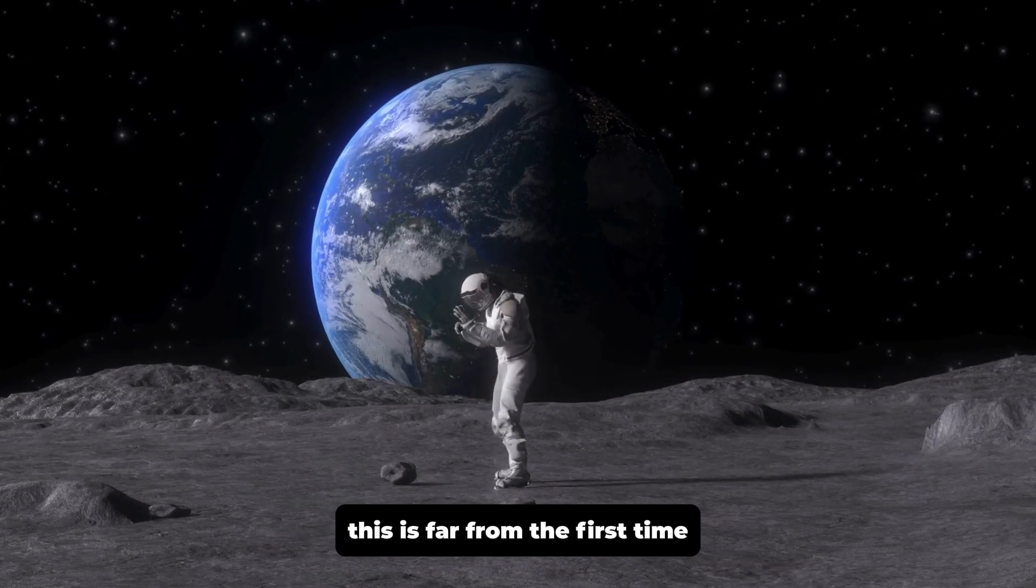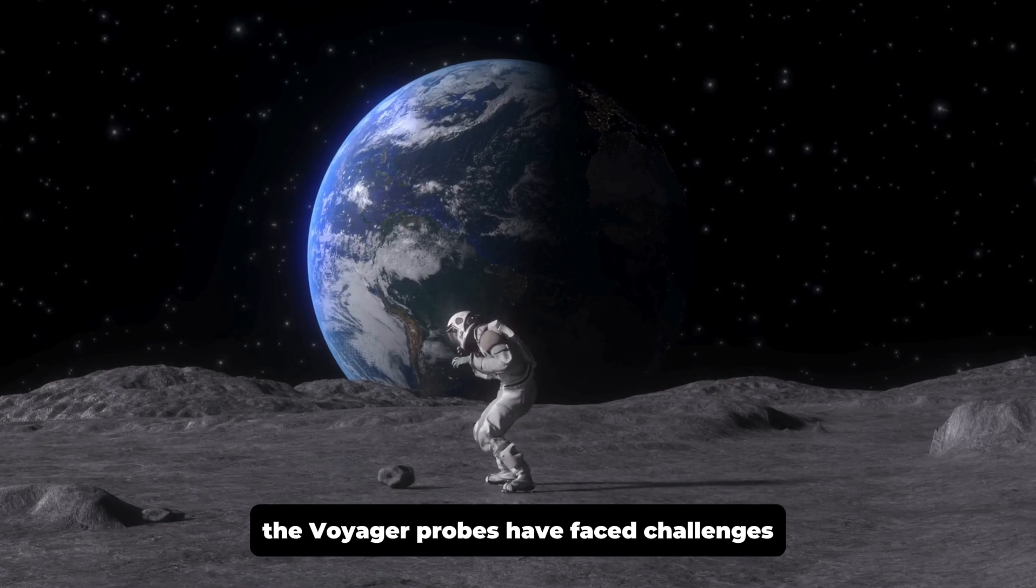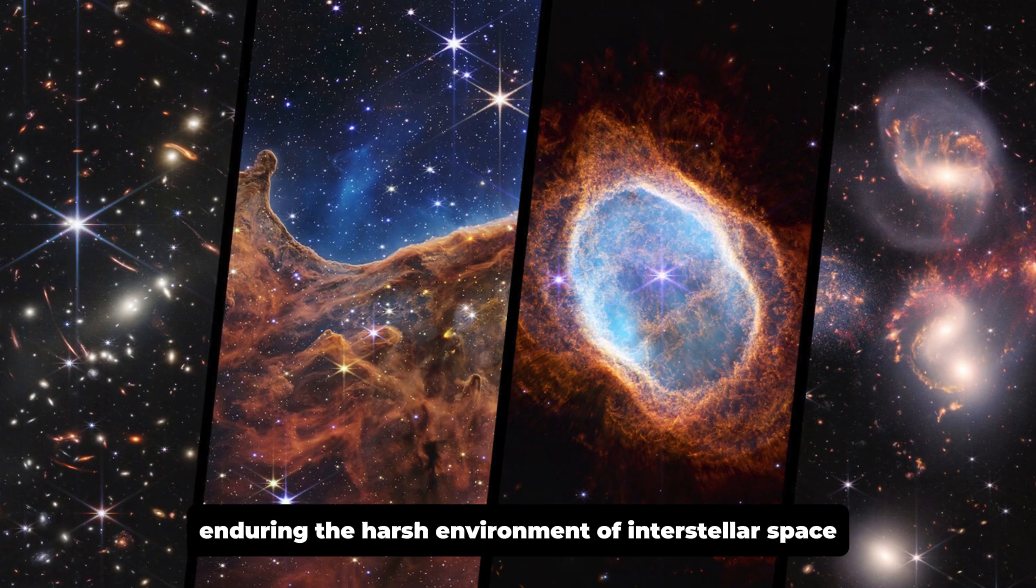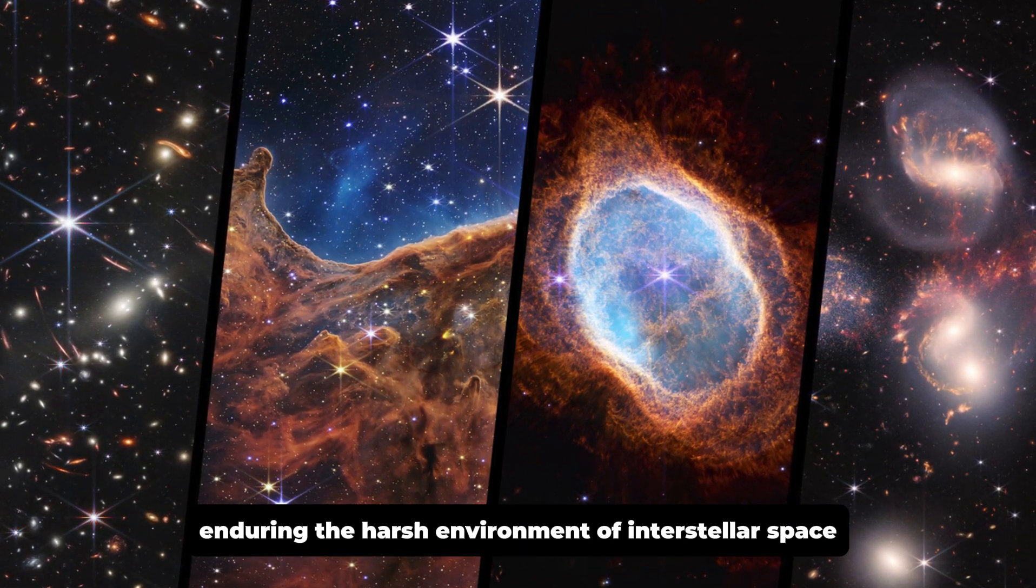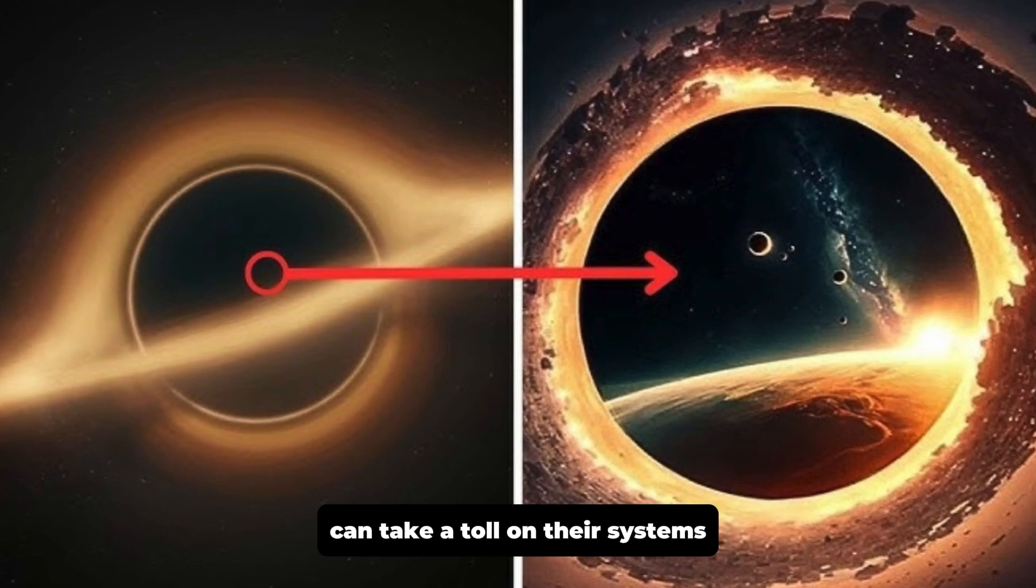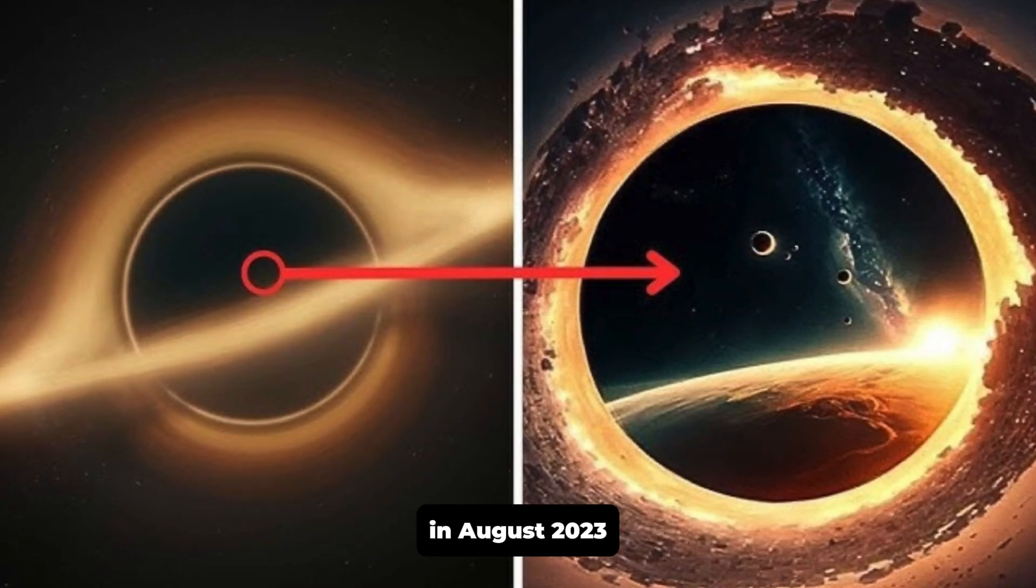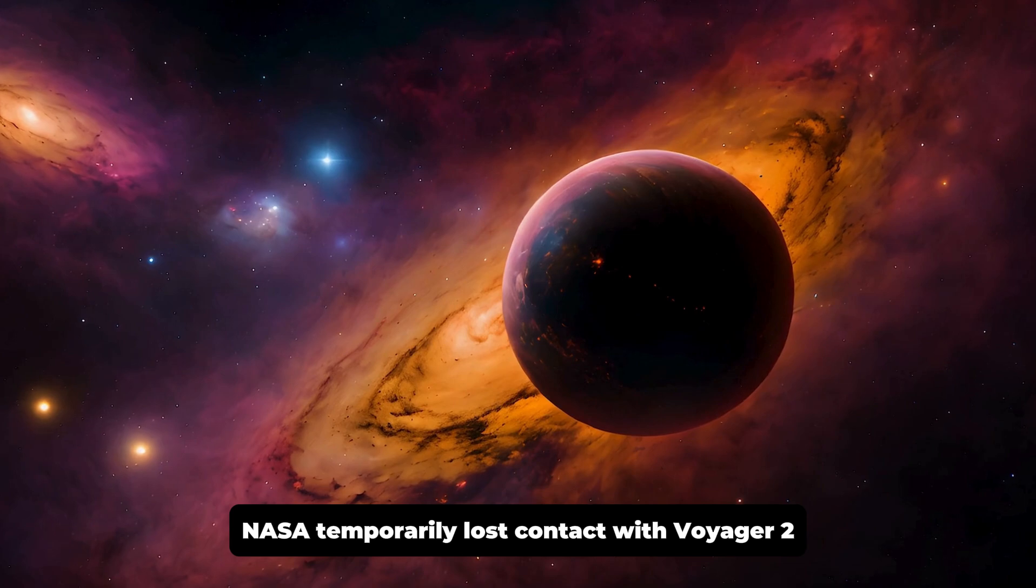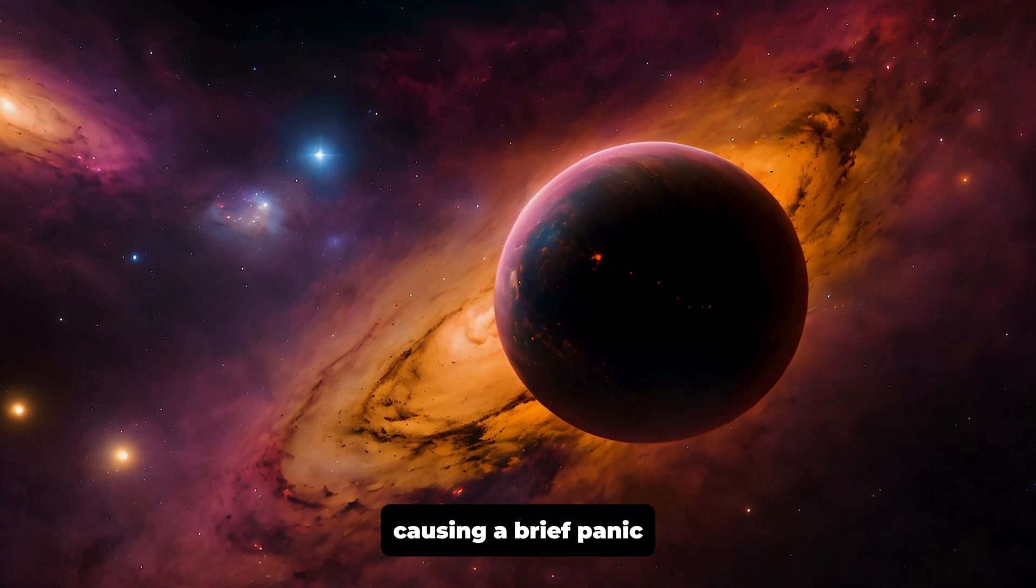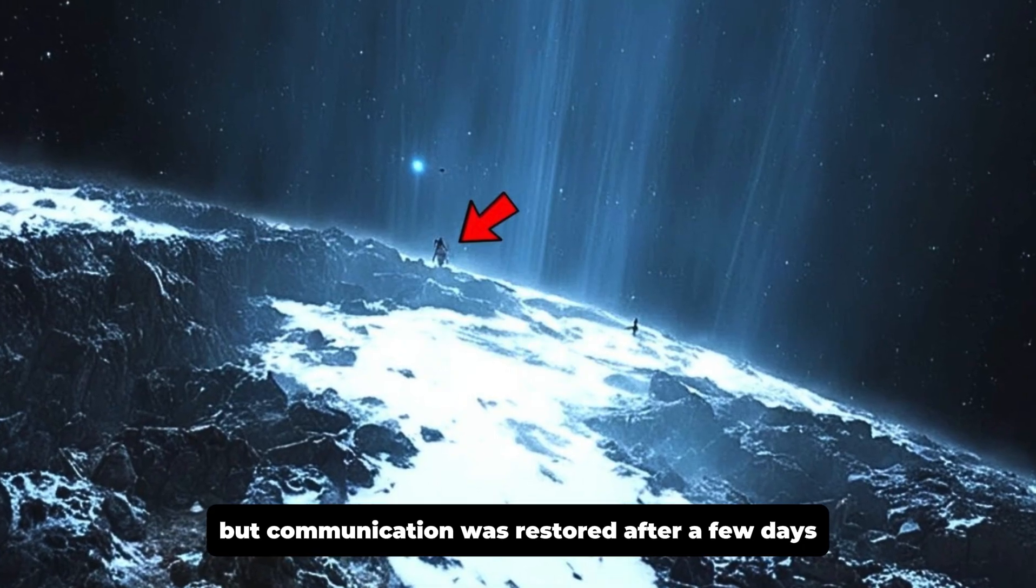This is far from the first time the Voyager probes have faced challenges. Both spacecraft have spent decades in space, enduring the harsh environment of interstellar space, where radiation and micrometeoroid impacts can take a toll on their systems. In August 2023, NASA temporarily lost contact with Voyager 2, causing a brief panic, but communication was restored after a few days.